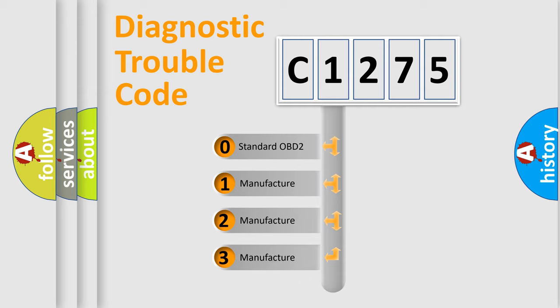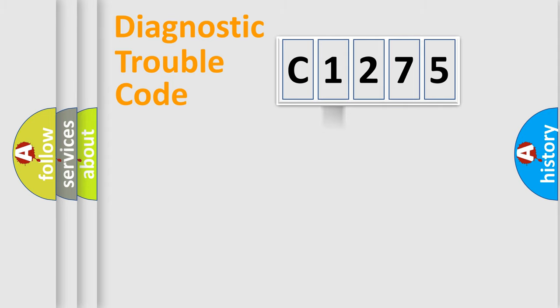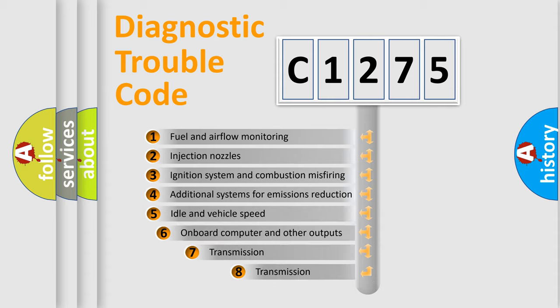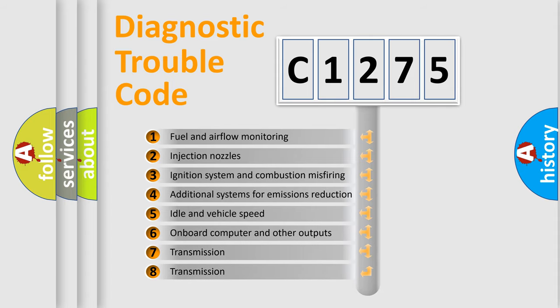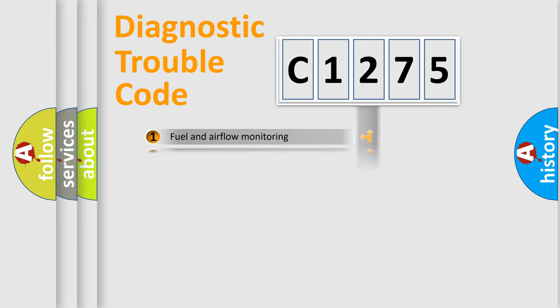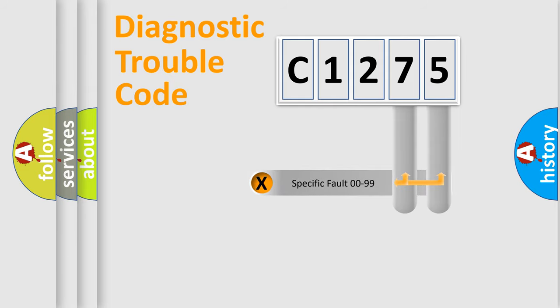If the second character is expressed as zero, it is a standardized error. In the case of numbers 1, 2, 3, it is a manufacturer-specific error. The third character specifies a subset of errors. The distribution shown is valid only for the standardized DTC code.